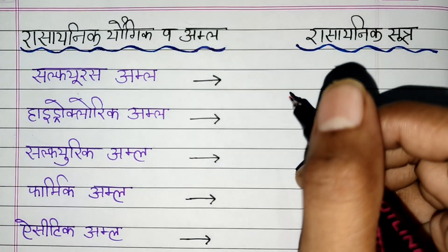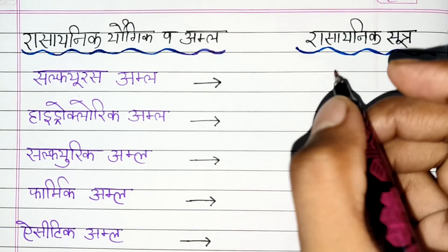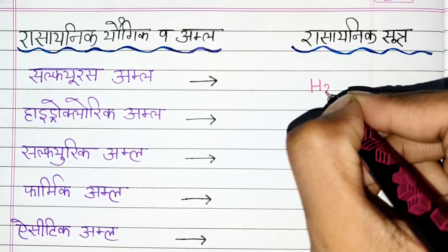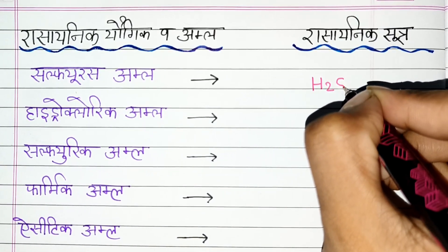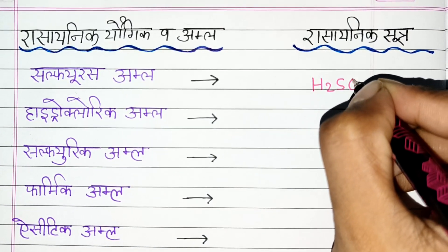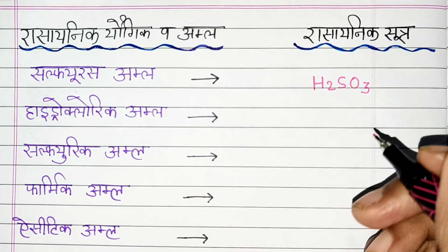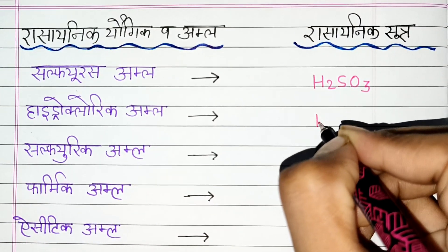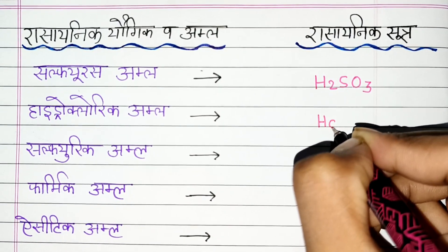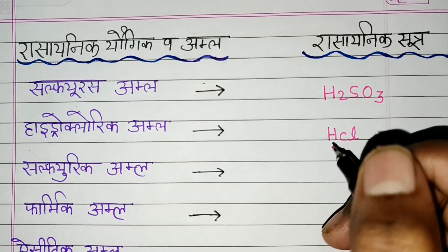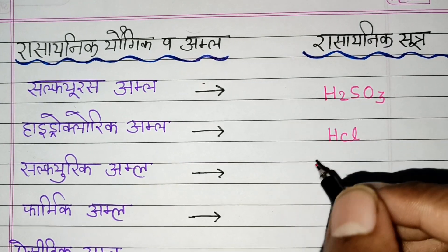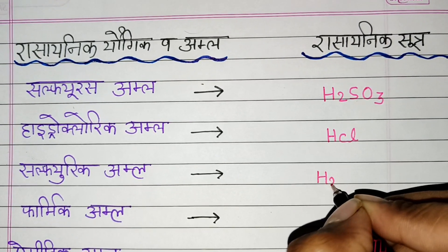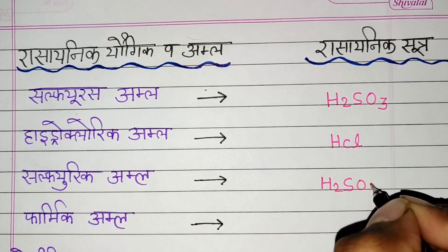1. Sulfurous Acid: H2SO3. 2. Hydrochloric Acid: HCl. 3. Sulfuric Acid: H2SO4.